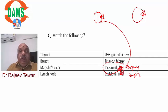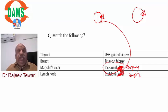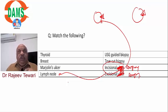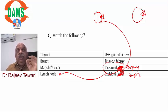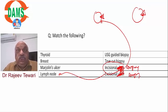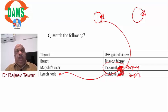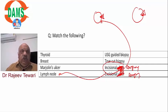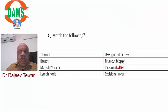Continuing biopsy types: Shave biopsy is done for basal cell cancer. Punch biopsy is done from the nipple, ear lobule, cervix, and certain other areas. Triple assessment for breast cancer (accuracy 99.99%): clinical examination, radiological (mammography ± ultrasound ± MRI), and pathological (FNAC or true-cut biopsy). PET-CT is for detecting metastasis, not for primary diagnosis. Incisional biopsy: only a small part of the lesion with normal skin is taken.